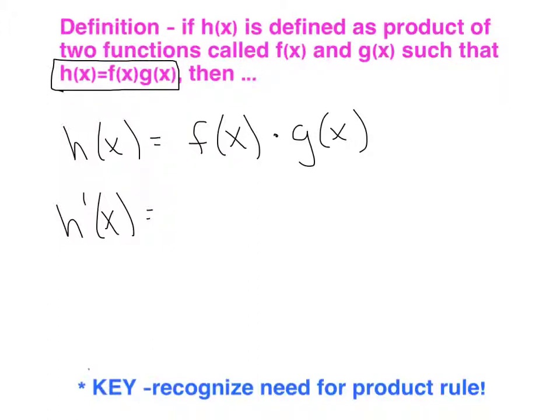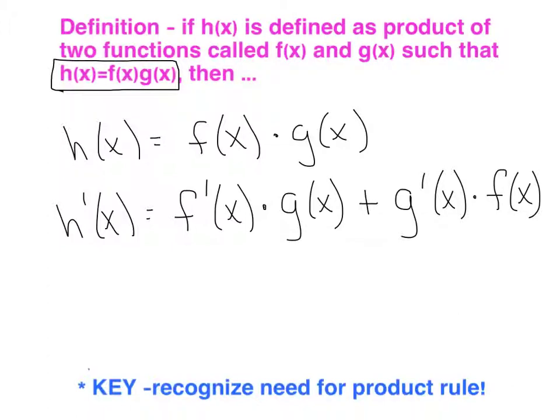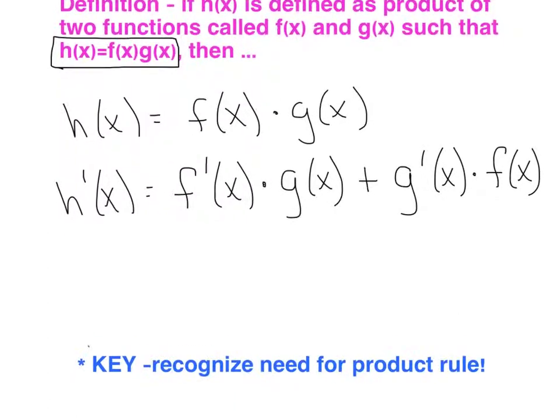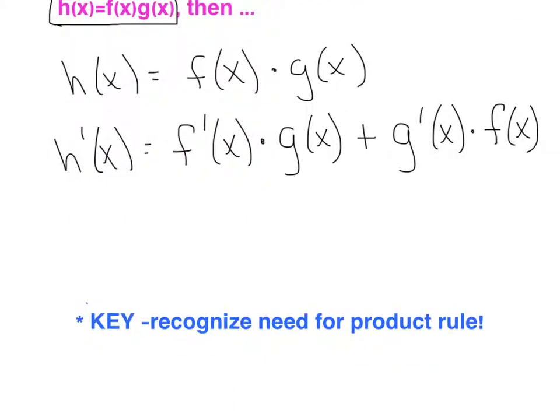So what the derivative says is we're going to derive that first function, f(x), and we're going to multiply him by the second function, just the original. Then we're going to add the derivative of the second function times the first function, the original f(x). And ladies and gentlemen, that's it. That's the pattern. And a big point of emphasis is just going to be recognizing when we need to use the product rule and when to stay away from it. So really be on your toes as we go through these next three examples.